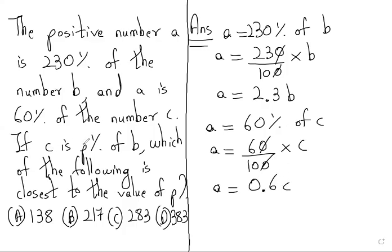Now, C is P percent of B. So we can write C equals P over 100 multiplied by B, which simplifies to C equals 0.01PB.